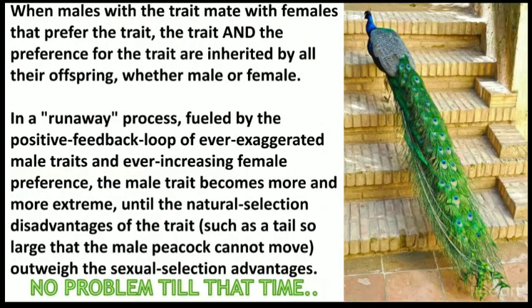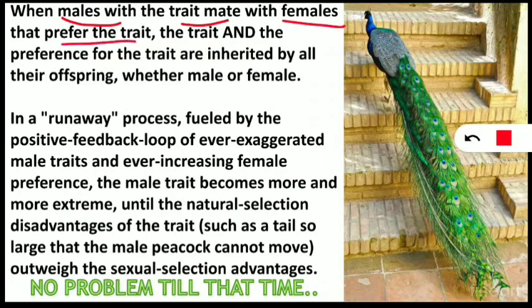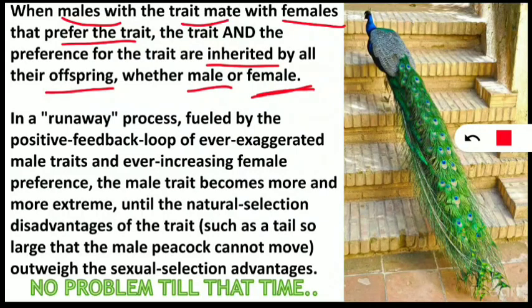When males with the preferred trait mate with females who prefer that trait, they pass those characteristics on to their offspring — whether male or female. That means males pass on their display traits to their male offspring, and females pass on to their female offspring the preference to be attracted toward larger or more decorative male traits.